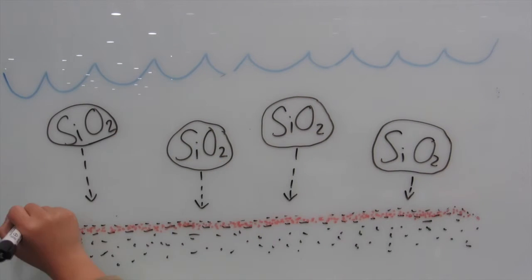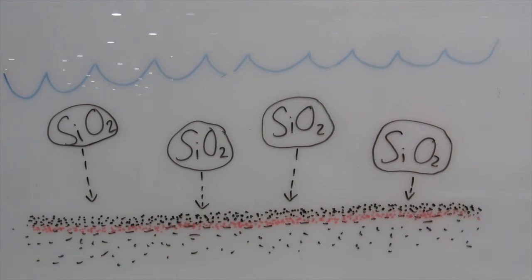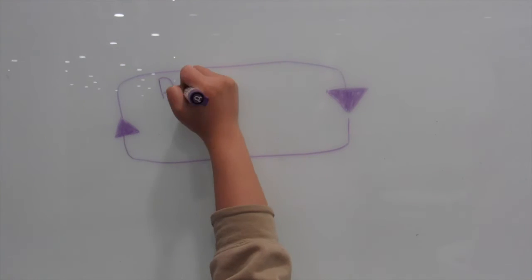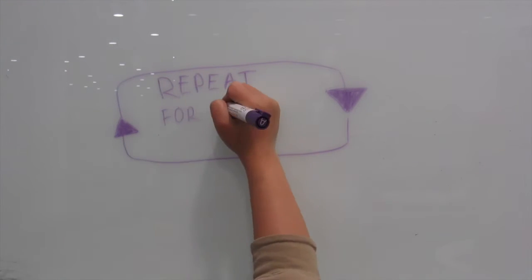During this time, the black iron-poor layers were deposited. Then the cycle repeats for over 500 million years until there was no more iron in the oceans.